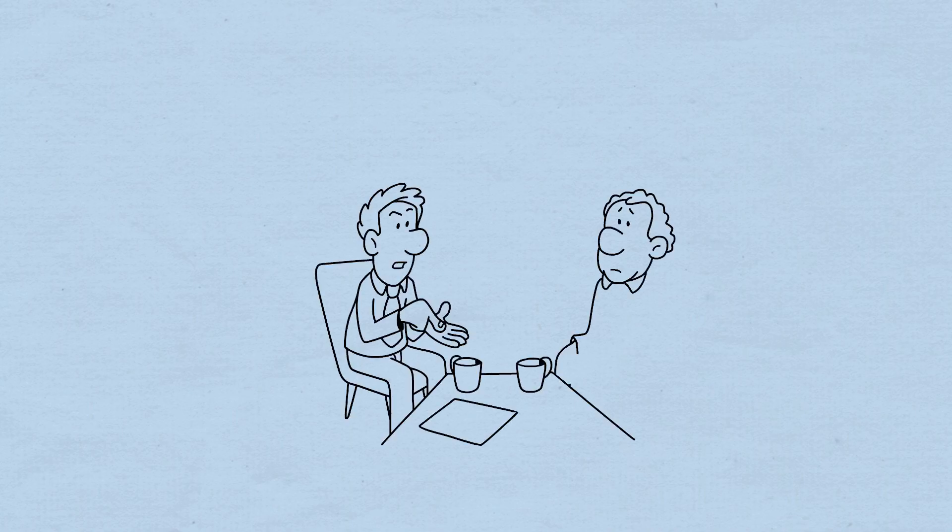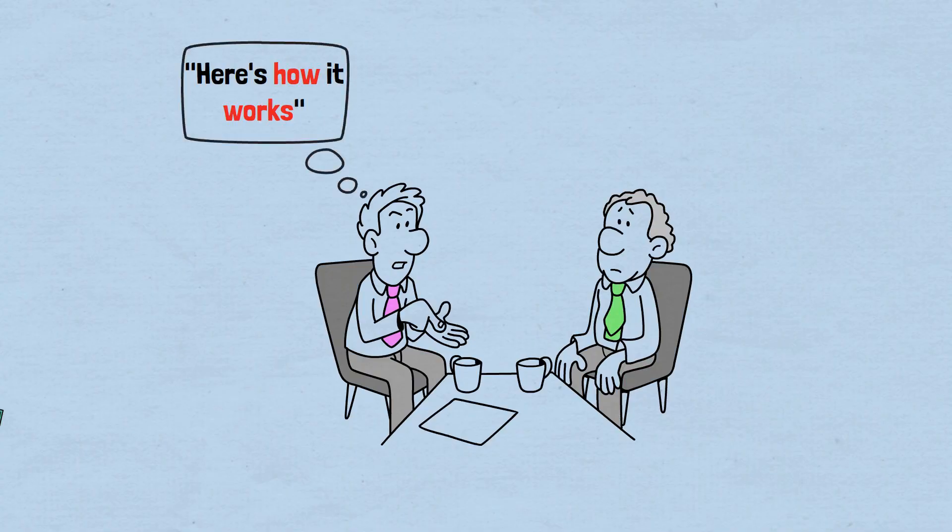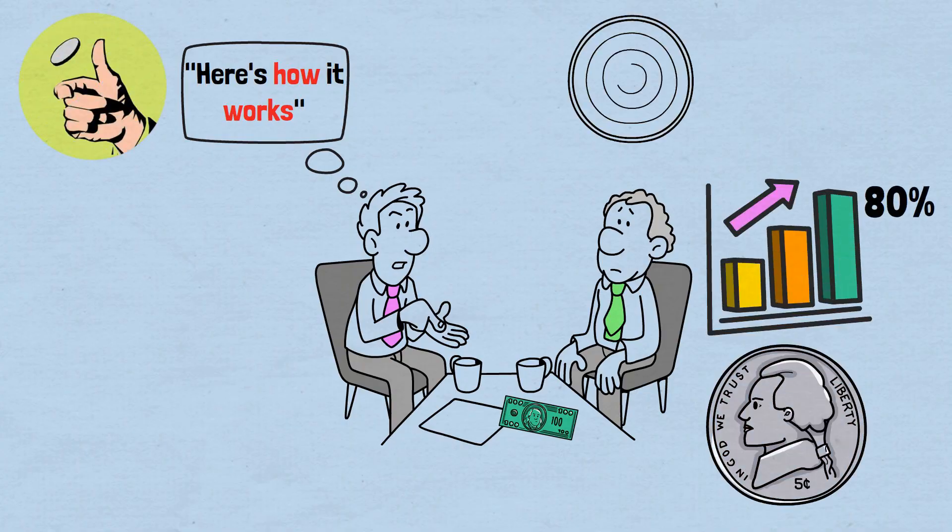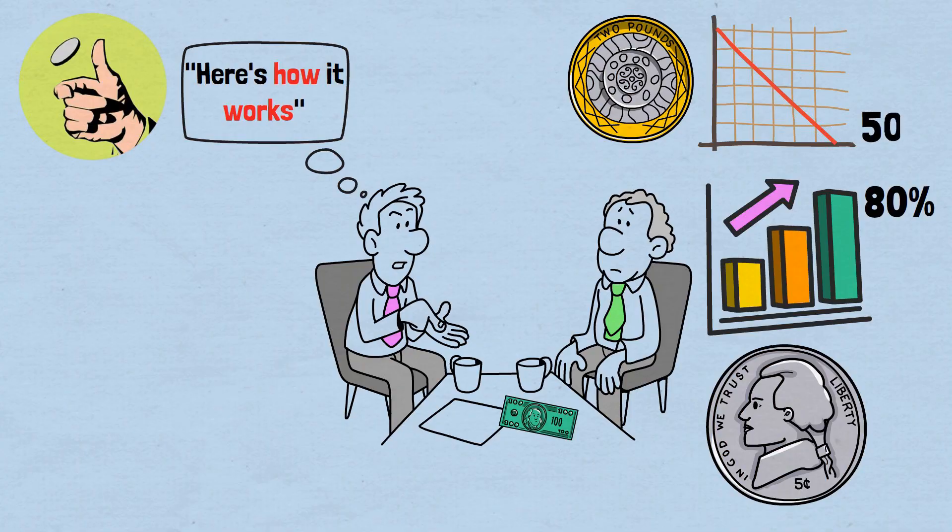You're sitting across from someone offering you what seems like the deal of a lifetime. Here's how it works, they say, sliding a crisp $100 bill across the table. We'll flip a coin. Heads? Your money grows by 80%. Tails? You lose only 50%. Want to play?